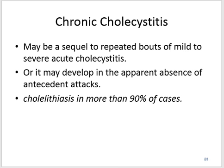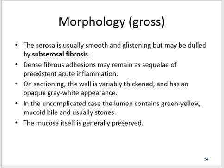Chronic cholecystitis may be a sequela to repeated bouts of mild to more severe acute cholecystitis, or it may develop in the apparent absence of antecedent attacks, with cholelithiasis in more than 90% of cases. Morphology: the serosa is usually smooth and glistening but may be obscured by subserosal fibrosis. Dense fibrous adhesions may remain from pre-existing acute inflammation. On sectioning, the wall is variably thickened and has an opaque grey-white appearance. In uncomplicated cases, the lumen contains green-yellow mucoid bile and usually stones. The mucosa itself is generally preserved.